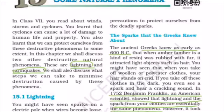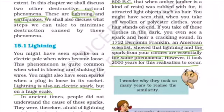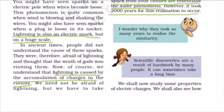In 1752, Benjamin Franklin, an American scientist, showed that lightning and the spark from your clothes are essentially the same phenomena. It took about 2,000 years for this realization to occur — from the Greek observation to Franklin's discovery. Scientific discoveries are a result of work by many people and can sometimes take a very long time.